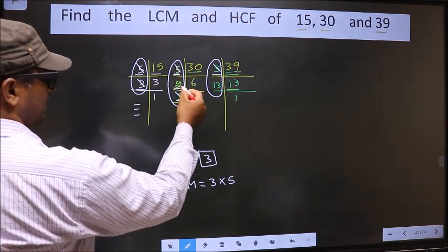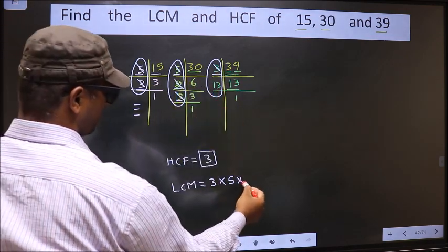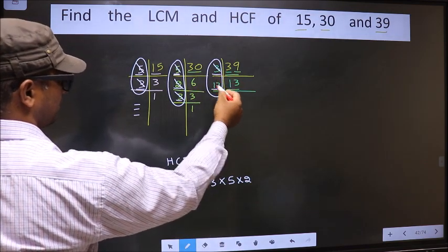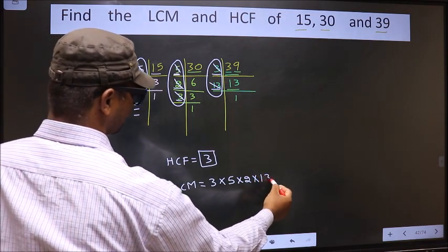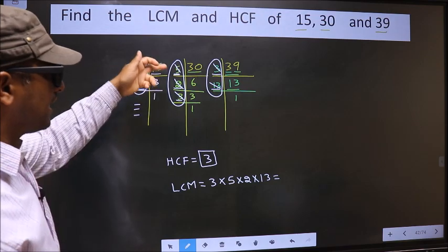Here we have 2. Do we have 2 here? No. So you cut 2 right here. Now here 13. So cut 13 and write here. Now each number has been cut.